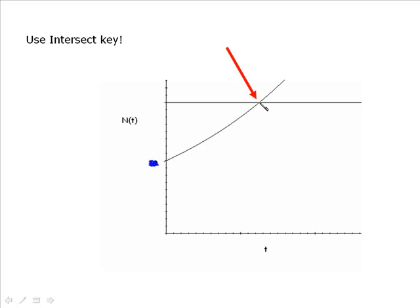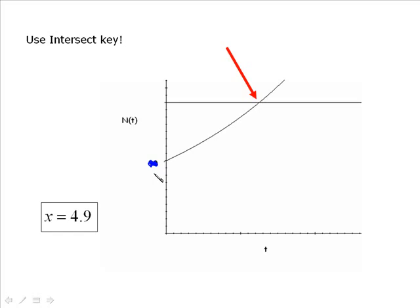And you have to find this point right there where the two meet. So you've seen that before. Your intersect key is in your calculate menu. I'm not going to bring up the calculator though unless I have to. And then you should get that x equals 4.9. And that would mean that the bacteria population is 3,000 after 4.9 hours. So you always have this. If you can't solve it algebraically, you can graph and use the intersection key when you need to find a specific x value for a given y value.